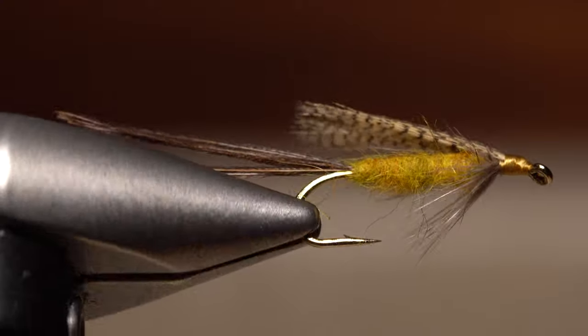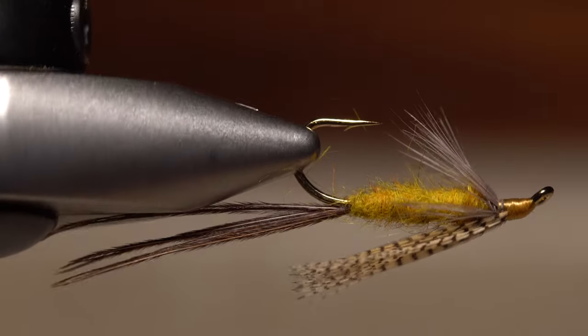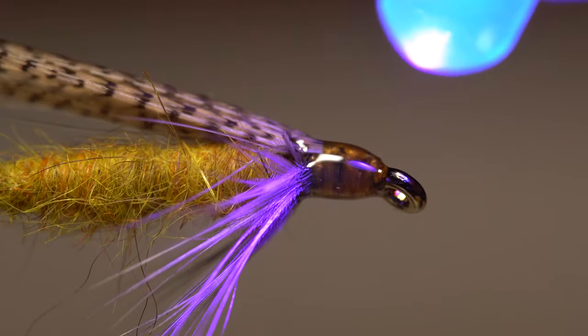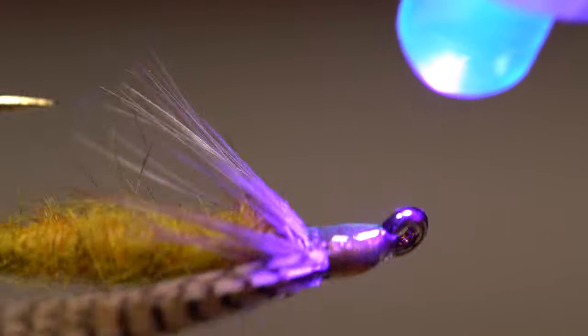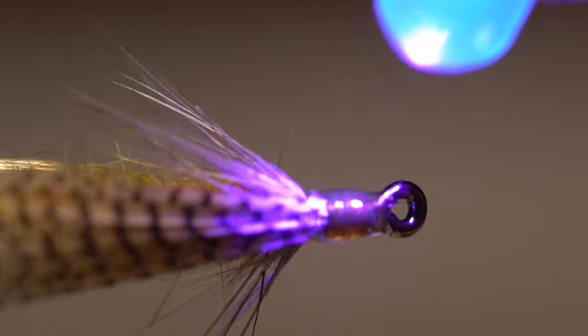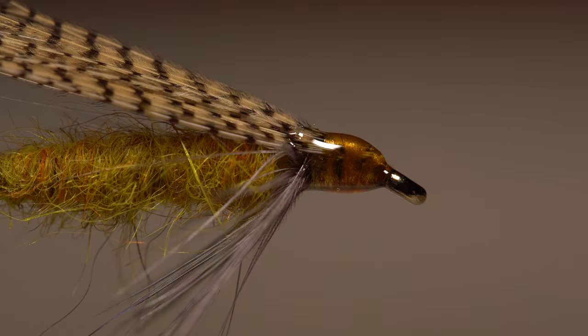The proportions are a little different than most nymphs, but as a whole, everything just seems to work. I like to use a drop of UV cure resin on top of the thread wraps to not only secure them, but also to build up a nice shiny head on the fly, kind of like on the naturals.